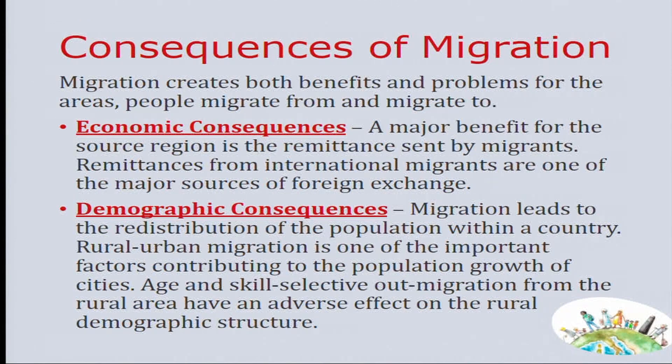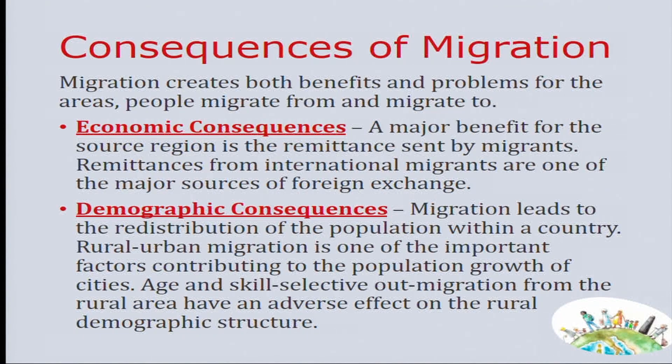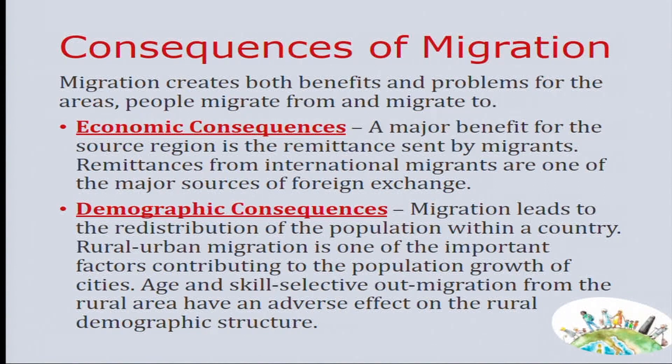What are the demographic consequences? Migration leads to the redistribution of population within a country. Mumbai, Chennai, and Kolkata are very thickly populated places, while there are places that become very sparsely populated because people move from there to these cities. Rural-urban migration is one of the important factors contributing to the population growth of cities. Age and skill selective out-migration: people in the 20 to 64 age group move out — that is a very productive period — while elders do not move out much. People with particular skill sets move out to work in particular industries. Out-migration from rural areas has an adverse effect on the rural demographic structure.